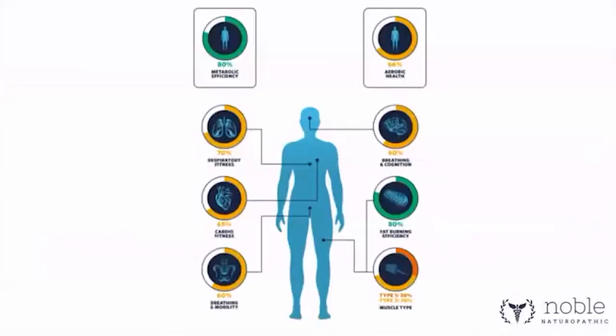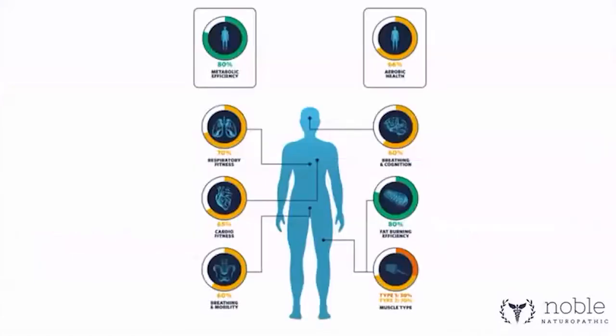The device reports results for metabolic efficiency, aerobic health, lung heart scores, mitochondrial health, fat burning efficiency, and muscle type. It's called the PNOE metabolism assessment device. We use it for resting metabolic rate analysis and active metabolism tests. It also gives you training zones so you can know how to train someone in an aerobic versus anaerobic zone, and you can predict total calorie burn for a workout.